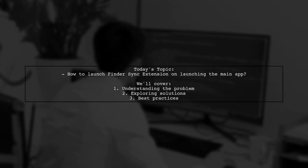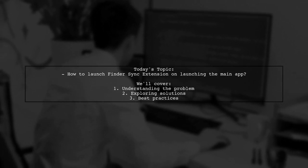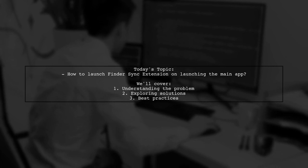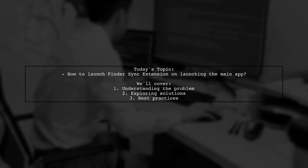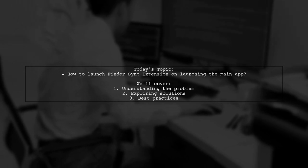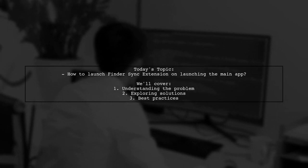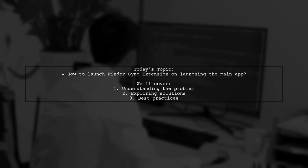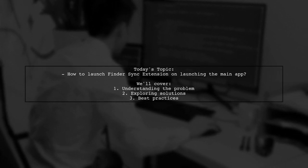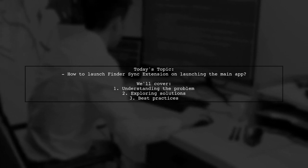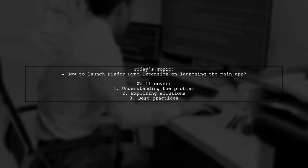Welcome to our Tech Explainer video. Today, we're tackling a question that many Cocoa developers encounter. Our viewer is curious about how to launch their Finder Sync extension automatically when their main application starts. They mention that currently, they have to manually enable it in system preferences, which can be quite inconvenient. So how can we ensure that the Finder Sync extension is activated right alongside the main app? Let's dive into this topic and explore some effective solutions.